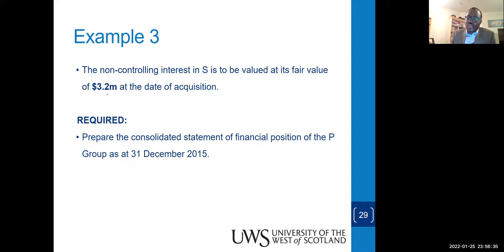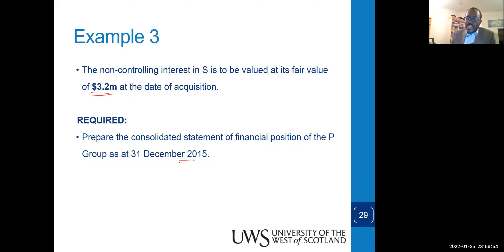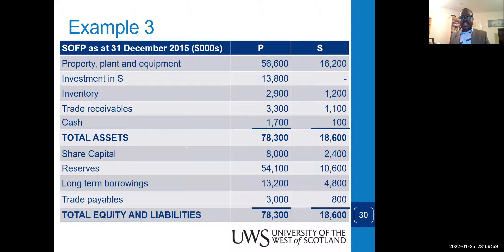The NCI in S is to be valued at its fair value of 3,200 — given directly in the question, so no need to calculate it. We are asked to prepare the consolidated statement of financial position as at 31 December 2015. The reporting period runs for exactly one year, with no pro-rata adjustments needed. We are also given the detailed financial statements for both the parent and the subsidiary.